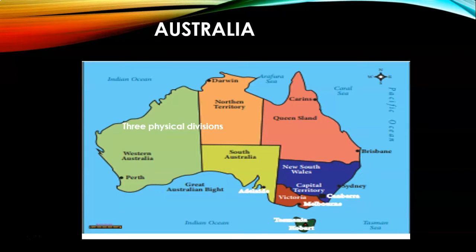Location and Size. Australia extends from 10 degrees 4 minutes south to 39 degrees 8 minutes south latitude, and from 113 degrees 9 minutes east to 153 degrees 39 minutes east longitude. The Tropic of Capricorn cuts the continent almost into two equal halves. The area of the country is about 7.68 million square kilometers.